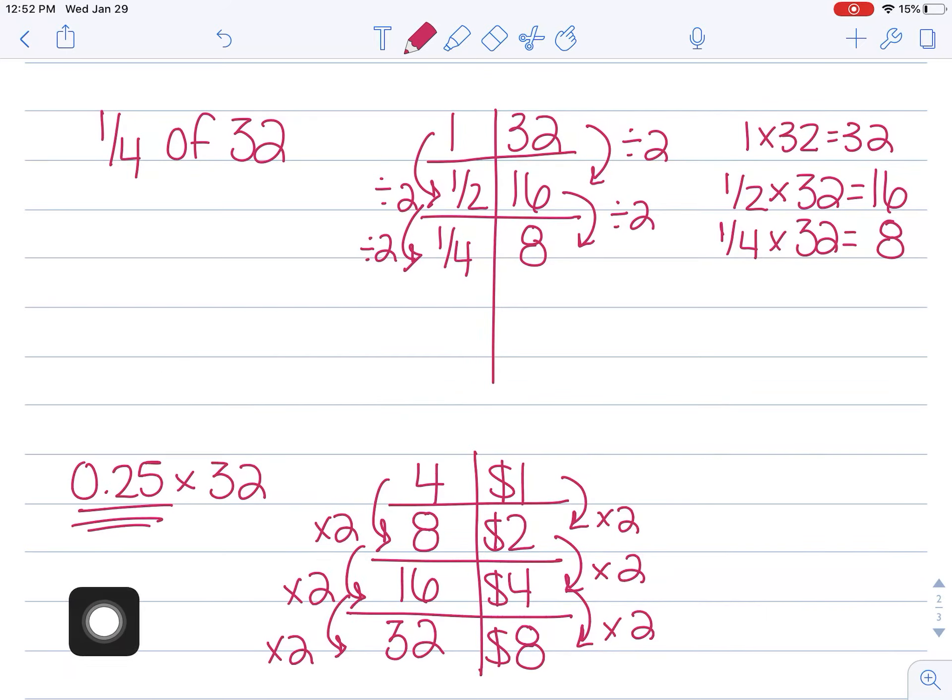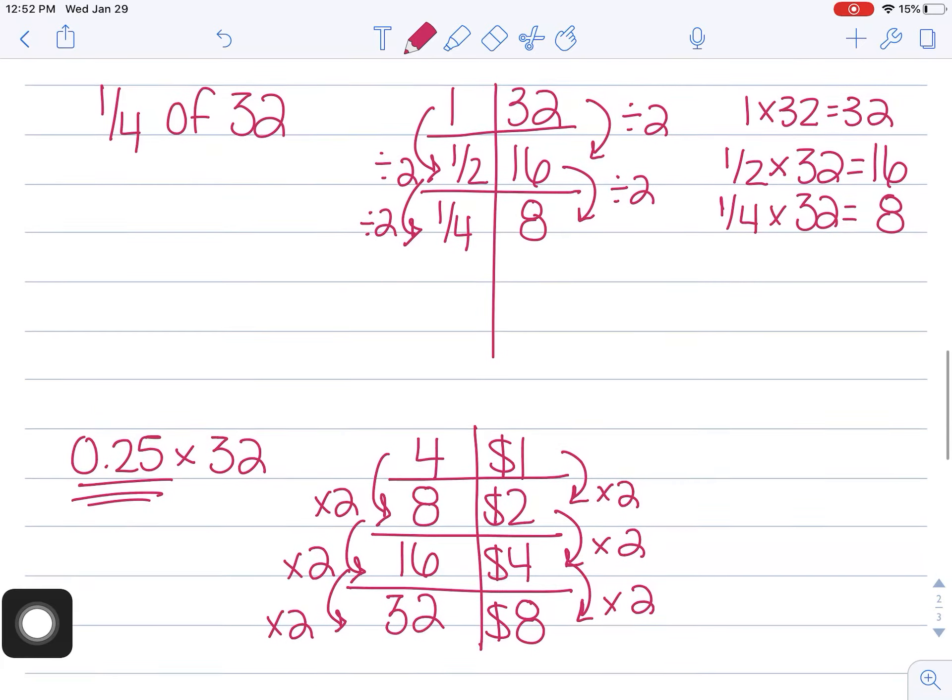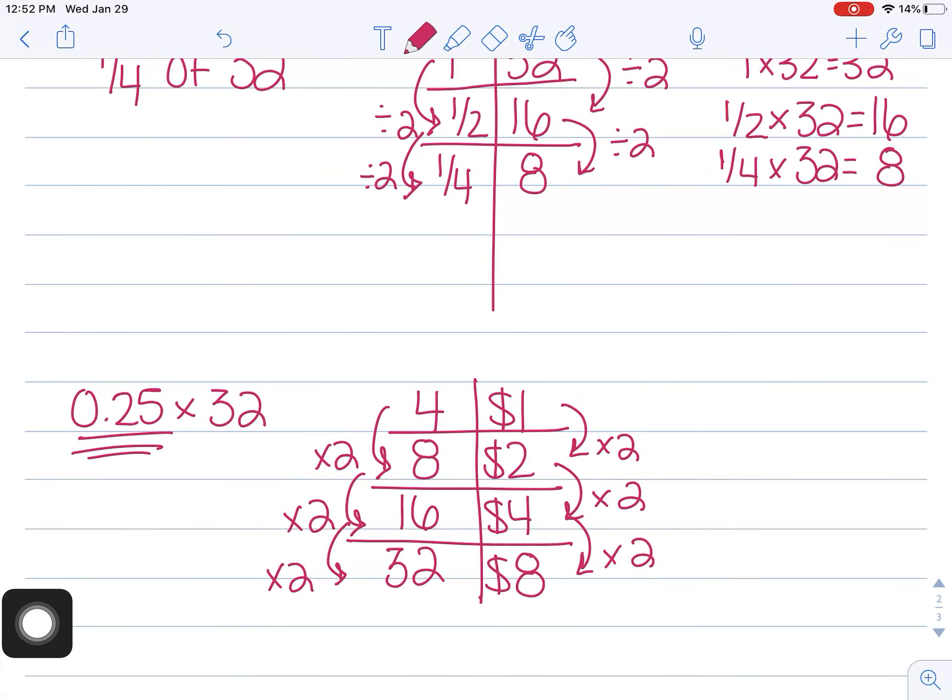So these are essentially both the same problem, but just two different ways of solving, right? So we do know that 0.25 is the same as 1 fourth. Those are equivalent. 1 fourth of 32 is 8. So, in effect, 0.25, which is the same as 1 fourth, times 32 equals 8.